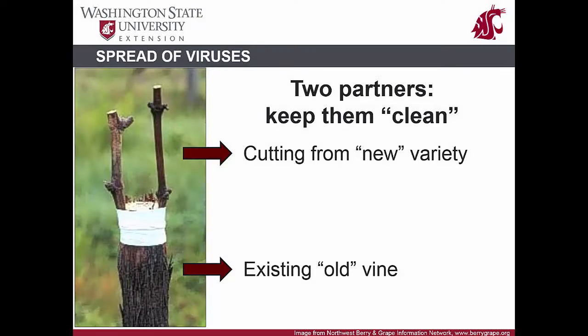Viruses infecting grapevines are not spread from infected to healthy plants by physical contact, and many are not spread through seed. Since grapevines are vegetatively propagated, viruses can be spread long distances by the distribution of infected cuttings. Viruses can also be spread by grafting scion material or budwood from an infected plant onto a virus-free rootstock. Conversely, virus can also spread through the rootstock to the scion even though the scion material is virus-free — thus it is very important to have both scion and rootstock free from virus.